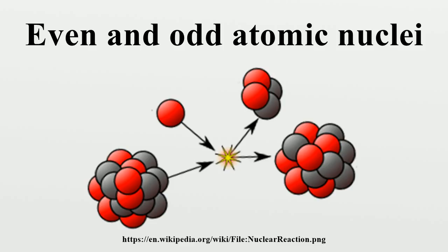This is because the single unpaired neutron and unpaired proton have a larger nuclear force attraction to each other if their spins are aligned instead of anti-aligned. See deuterium for the simplest case of this nuclear behavior.